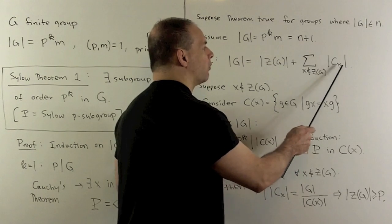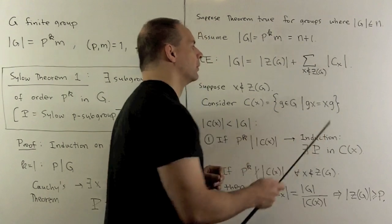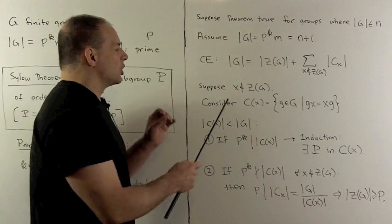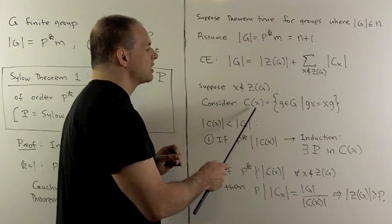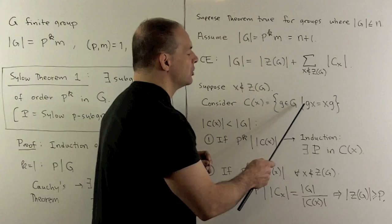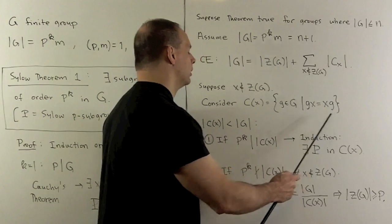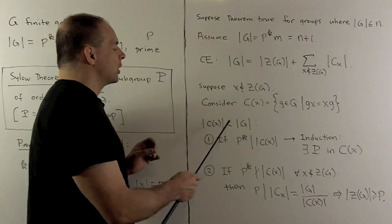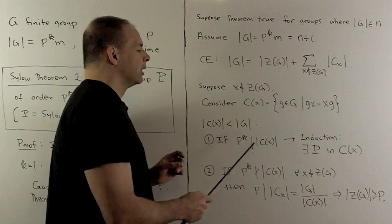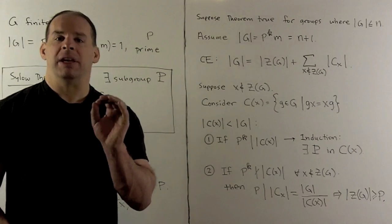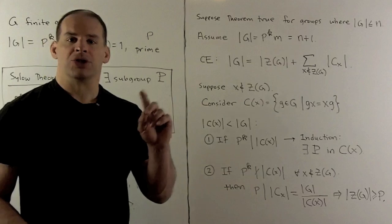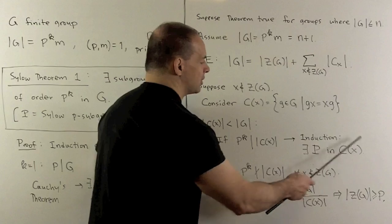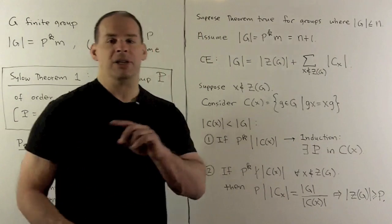Here we just use one representative per class. We want to focus on the elements that are not in the center. If we take the centralizer of one of these elements not in the center, say x, that's given by the set of all g in the group such that g and x commute, and this is a subgroup. Since x is not in the center of the group, the order of the centralizer is strictly less than the order of the group. We have two cases. If p^k divides the order of the centralizer, so our subgroup is going to arise naturally, then induction says we have our Sylow p-subgroup in the centralizer, and that means it's just going to sit in the group itself.